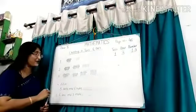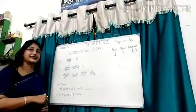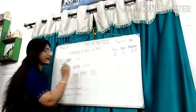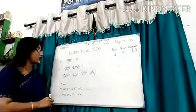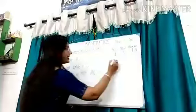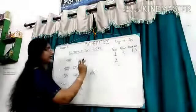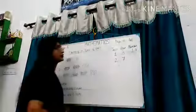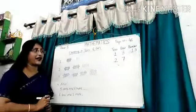Next, here I have 2 bundles of 10 sticks and 1, 2, 3, 4, 5, 6, 7. 7 loose sticks. So 2 bundles, 2 10s and 7 loose sticks means 7 1s. So the number is 27.